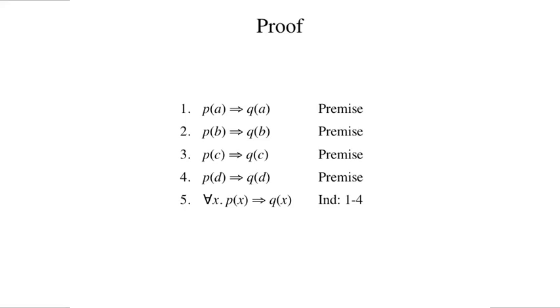The trivial proof shown here shows how we can use this rule to derive an inductive conclusion. Suppose we have the ground implications shown as premises on lines 1 through 4. Using our domain closure rule, we can then derive the inductive conclusion. For all x, p of x implies q of x.